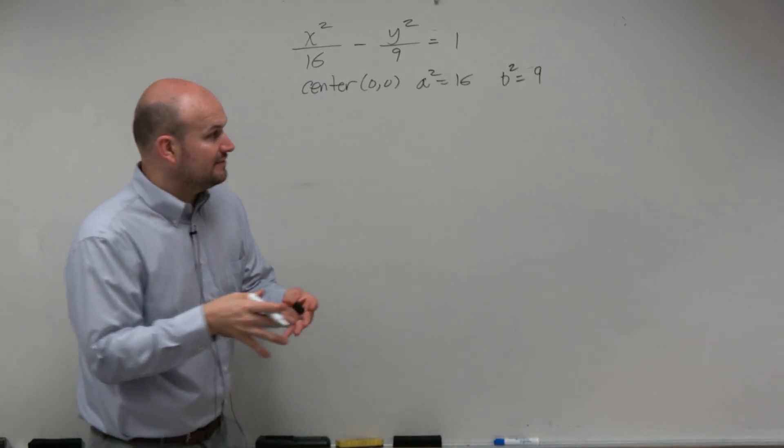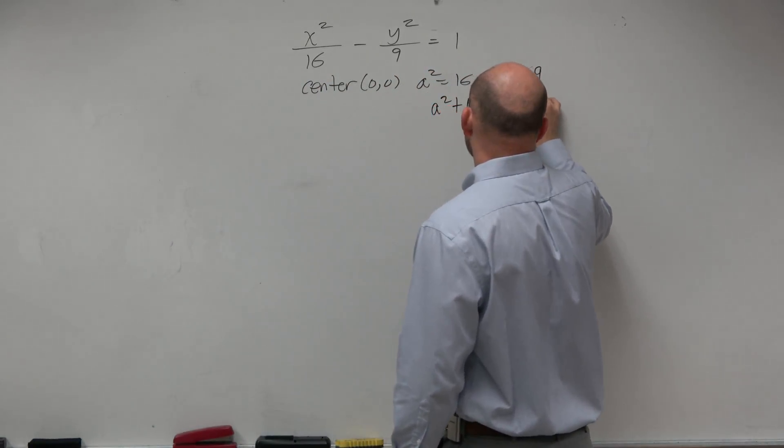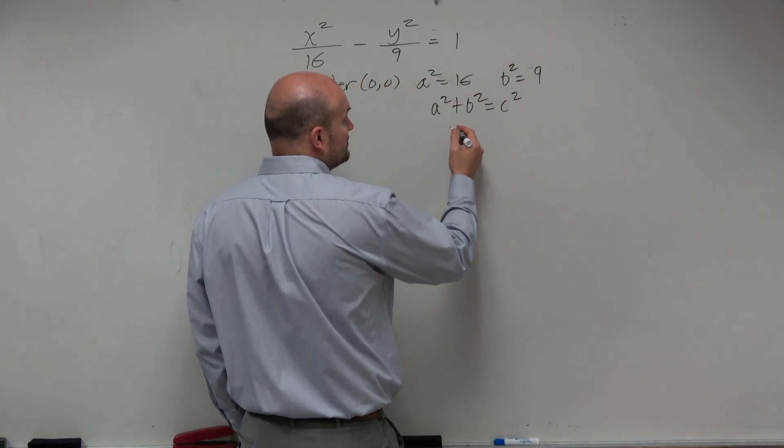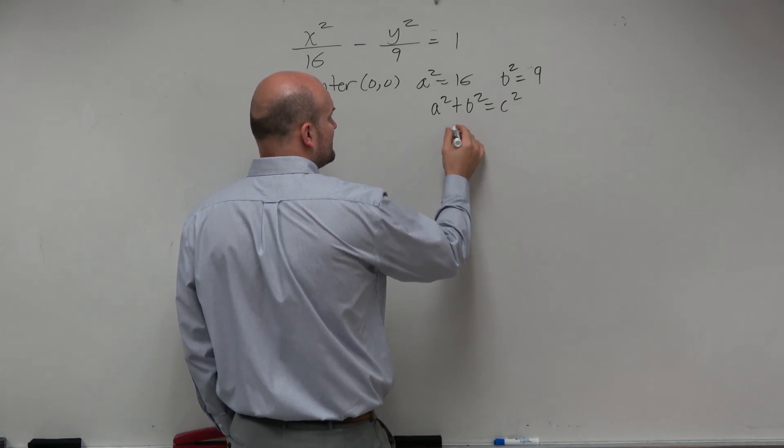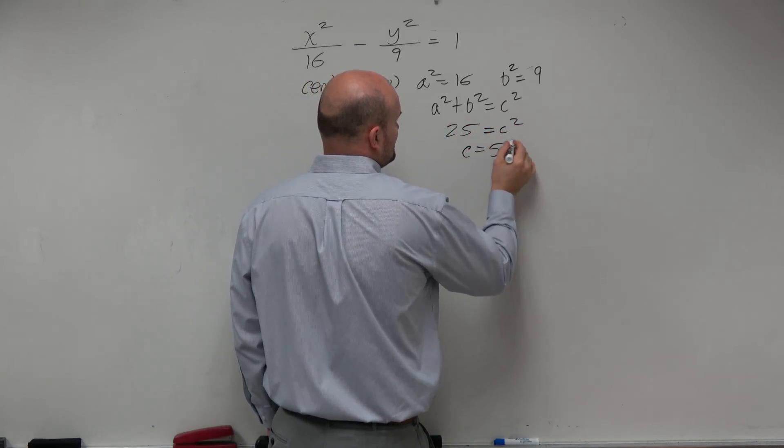Remember, the formula to find c squared is a squared plus b squared equals c squared. So a squared plus b squared is going to be 25. No, that's 20, yeah, 25. So therefore, c equals 5.